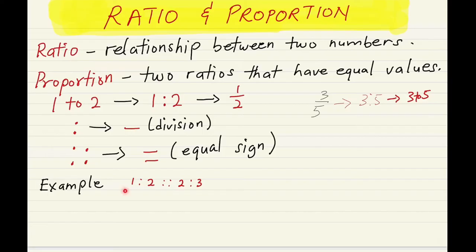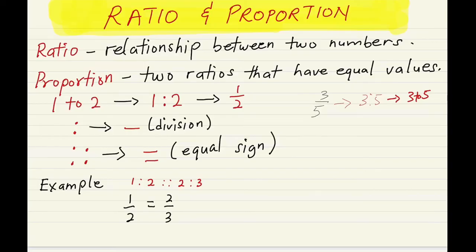What I've explained here is that the ratio notation can be expressed as a division sign, and the four dots in a proportion can also be expressed as an equal-to sign. So for example, 1 is to 2 as 2 is to 3 can be written as 1 over 2 is equal to 2 over 3, because the four dots represent equality and the two dots represent division.